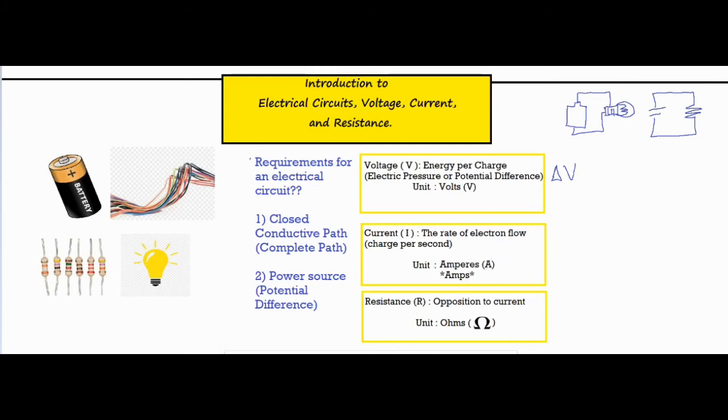Now for our last part, it is resistance, capital R. And just as it sounds, it's some sort of opposition to the current. So once you place any sort of resistance into the circuit, it is going to slow the flow of electrons, and that's measured by the unit of ohms, and typically that is represented by an omega symbol.